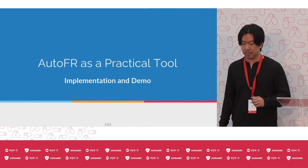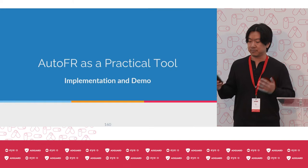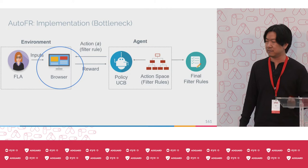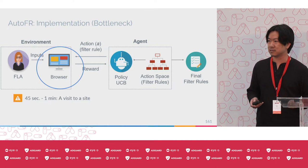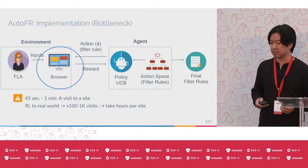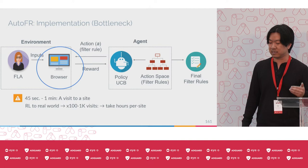Next, I'll explain how we go from this framework to implementing it as a practical tool. One major bottleneck is that every time you test a rule, you have to visit the site. This can take up to 45 seconds to a minute to wait for it to load to see if ads are served. This is a big problem when using reinforcement learning for real-world applications, since the agent has to test hundreds or even thousands of times — we predicted this would take about 13 hours per site.